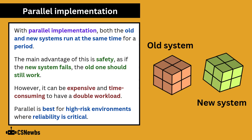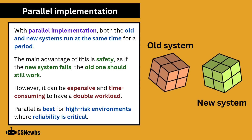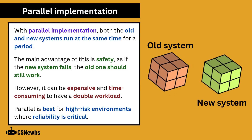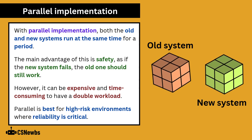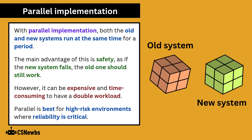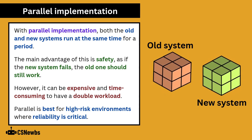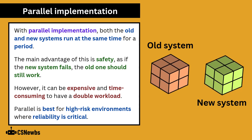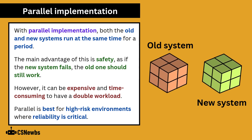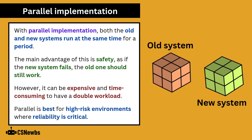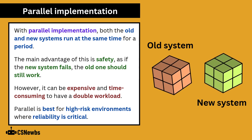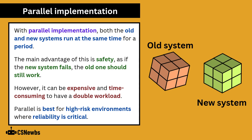With parallel implementation, both the old and new systems run at the same time for a period. The main advantage is safety — if the new system fails, the old one should still work. However, it can be expensive and time-consuming to have a double workload. Parallel implementation is best for high-risk environments where reliability is critical.